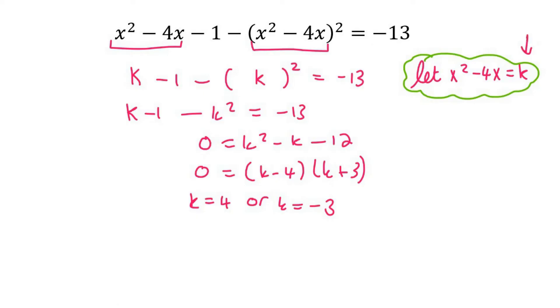So if k equals 4, then we can say x² - 4x = 4. See what I did? I just plugged the k in there. And then x² - 4x - 4 = 0.